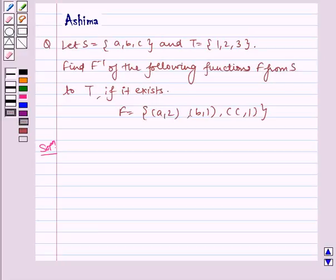Hello and welcome to the session. Let us understand the following problem today. Let S = {a, b, c} and T = {1, 2, 3}. Find f inverse of the following function f from S to T if it exists. f = {(a, 2), (b, 1), (c, 1)}.